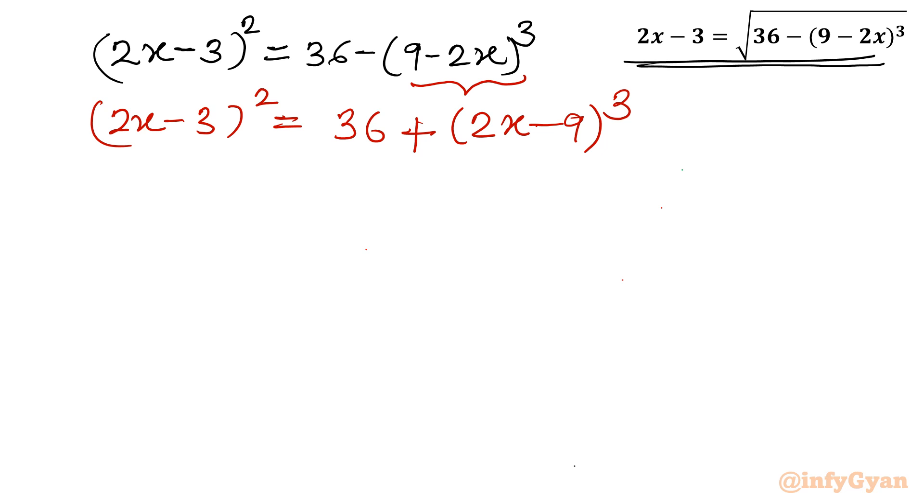Now let us use substitution. Let 2x minus 9 equal to a. So I need to write 2x minus 3 also. Add 6 to both sides, so 2x minus 3 equals a plus 6. Both of these values we have to apply in this equation.